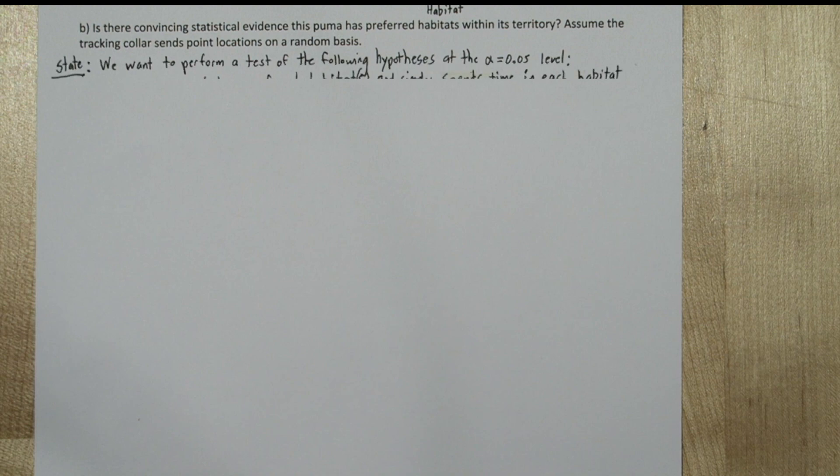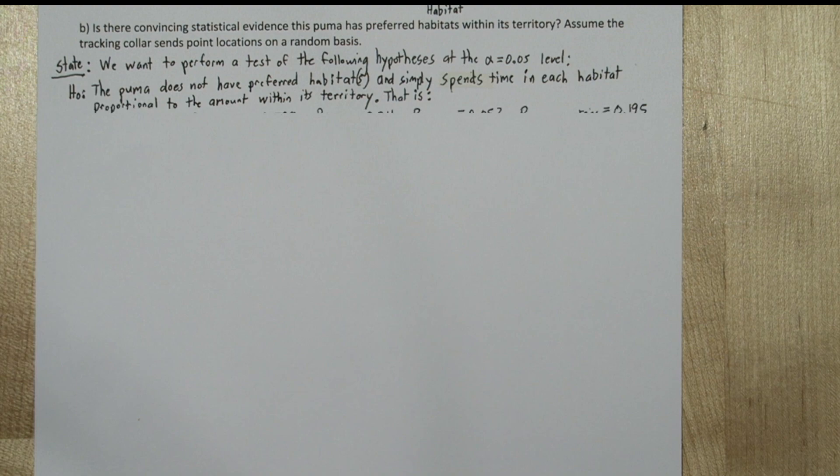So we're going to use the four-step process in Part B. So for the state step, we want to perform a test of the following hypotheses at the alpha equals 0.05 level. Our null hypothesis is the puma does not have preferred habitats and it simply spends time in each habitat proportional to the amount within its territory.